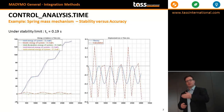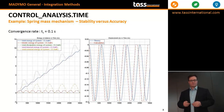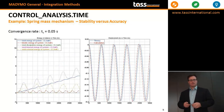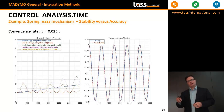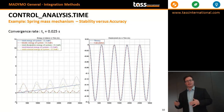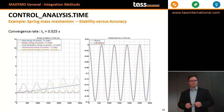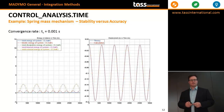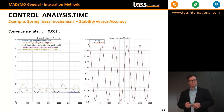Let's lower the time step in several steps: first to 0.1 seconds, then 0.05 seconds, then 0.025 seconds — you can see that the total energy becomes more and more constant, drifts less and less, and the displacement of the mass approximates the analytical solution better and better. Eventually at a time step of 0.001 seconds, the total energy is constant and the displacement of the mass well approximates the analytical solution.